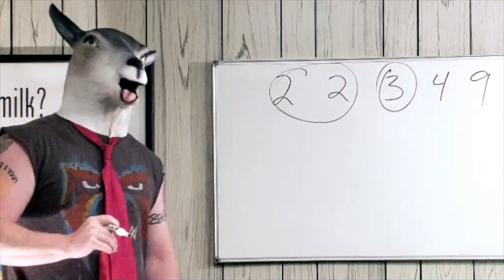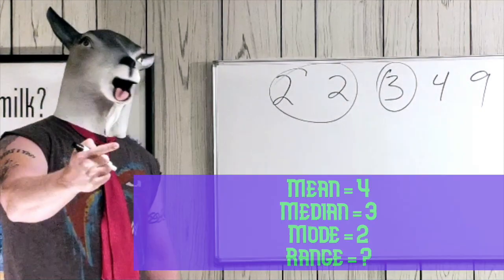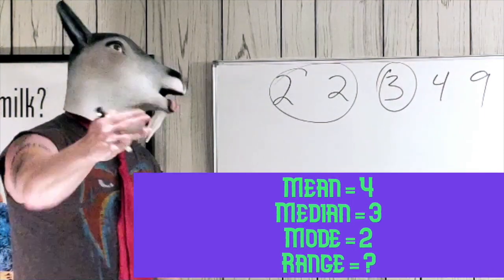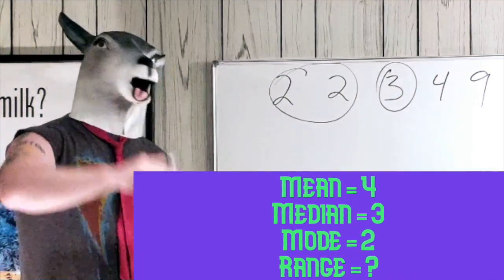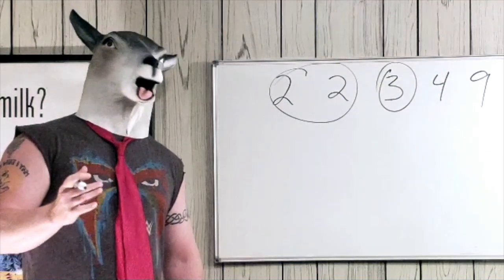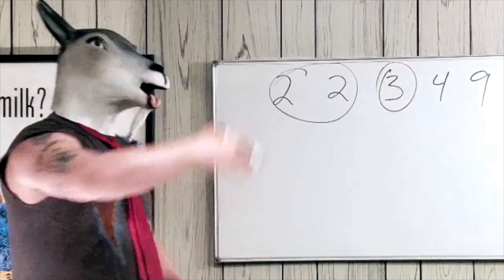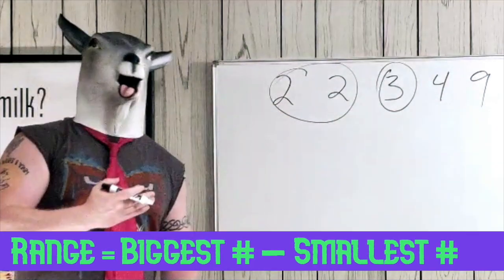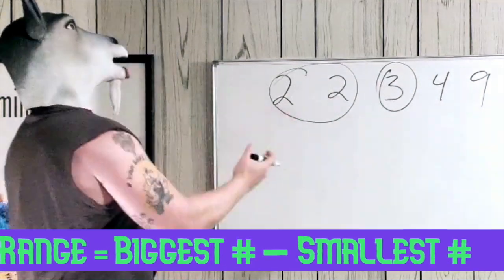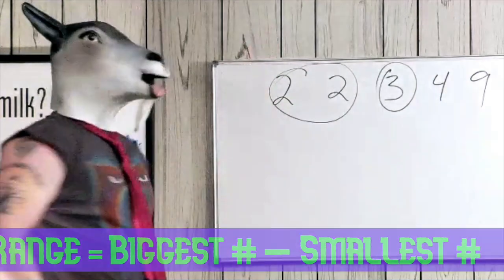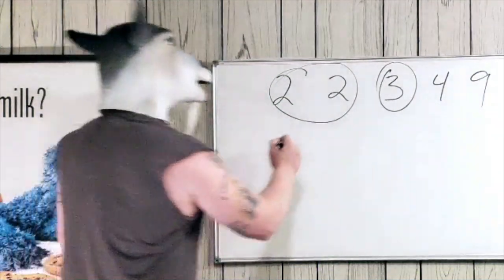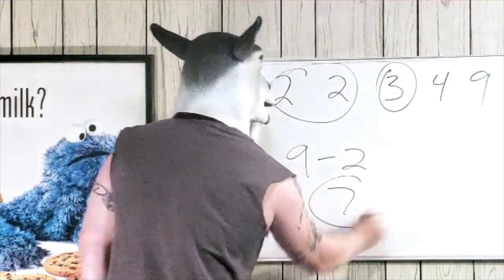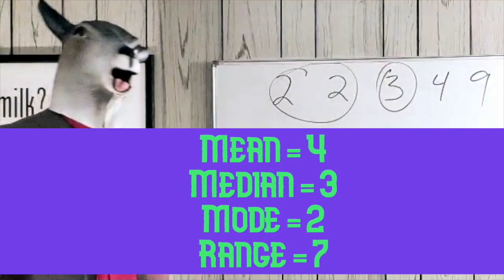Now we're left with one last thing. We have a mean of 4, a median of 3, and our mode is 2. Now we gotta find the range. You're just taking the biggest number and subtracting the smallest number. So we got 9 over there and 2 over there. 9 minus 2 — everyone knows 9 minus 2 is 7.